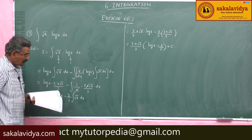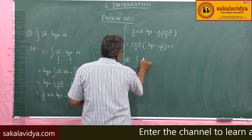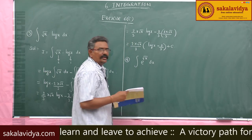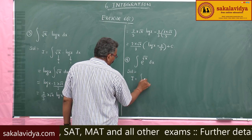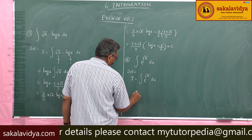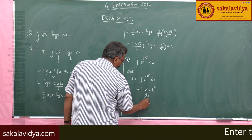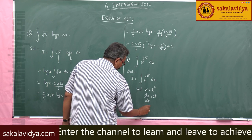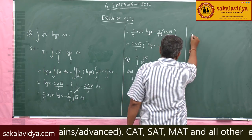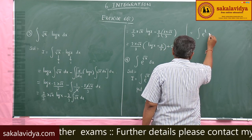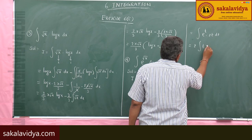Fourth problem: evaluate the integral of e to the power of √x dx. Solution: let I equal the integral of e^√x dx. Put x = t², so dx/dt = 2t and dx = 2t dt. The integral becomes the integral of e^t times 2t dt, which is 2 times the integral of t times e^t dt.